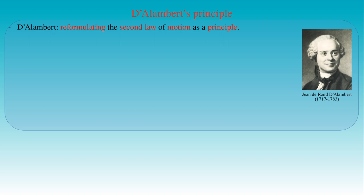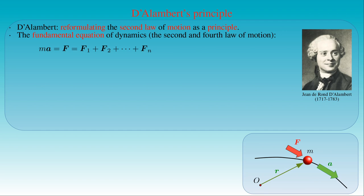Let us start with Newton's second law of motion, where the fundamental equation of dynamics states that the mass m of a point mass times its acceleration a is equal to the vector sum f of the forces f1 to fn acting on the point mass. This form of the fundamental equation includes the fourth law of motion, stating that force is a vector — that is, the net force f of a system of forces acting on a body is given by their vector sum.